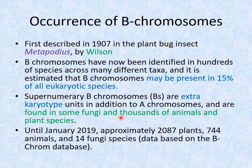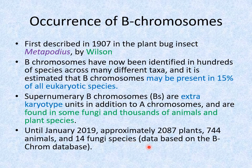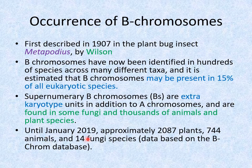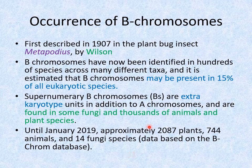As sequencing and other efforts are in progress, B chromosomes are present throughout the living world, ranging from fungi to various animals and plant species. According to the B chromosome database, until January 2019, approximately 2,087 plants, 744 animals, and 14 fungi species have been reported to contain this B chromosome element.